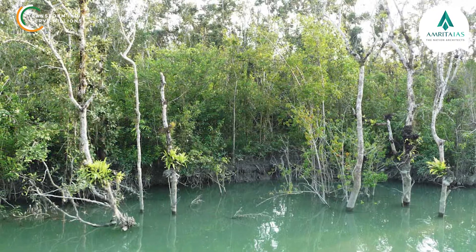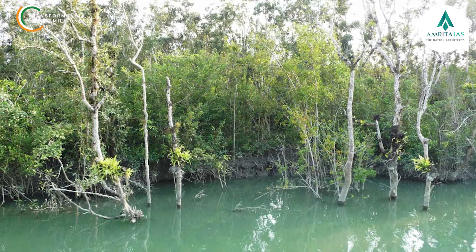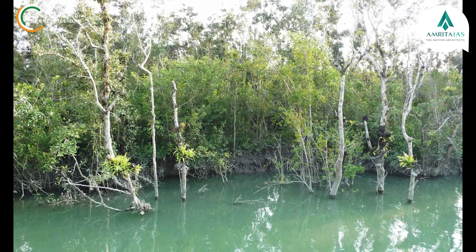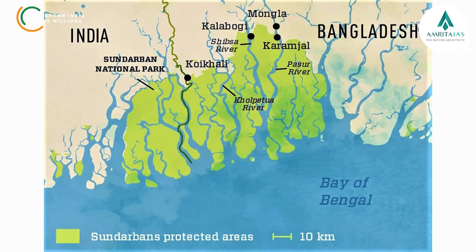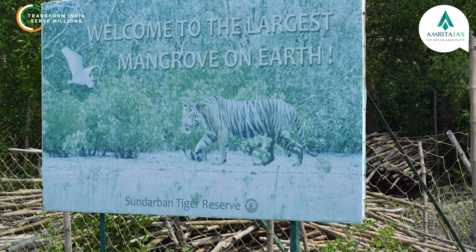The Sundarbans mangrove forest, one of the largest such forests in the world, lies across India and Bangladesh on the delta of the Ganges, Brahmaputra, and the Meghna rivers on the Bay of Bengal.